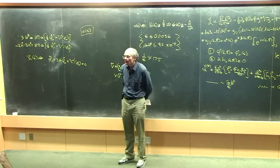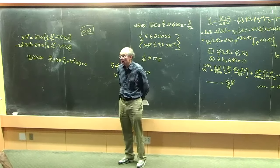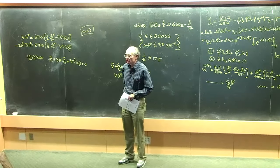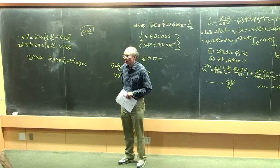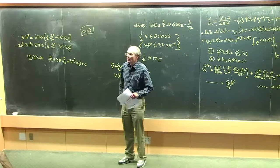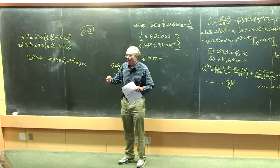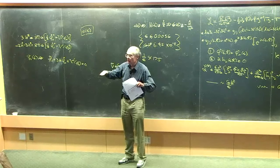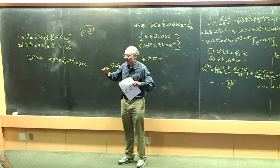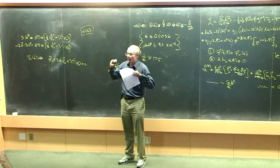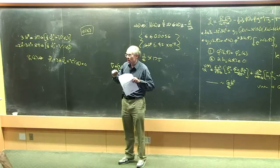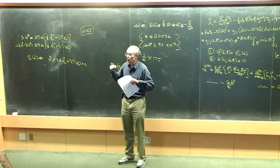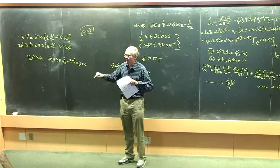The vacuum used is the FRW analog of the Bunch-Davies vacuum — the minimum energy state in the distant past. This is all free field theory, a harmonic oscillator mode by mode, but with a time-dependent mass and frequency. Other questions? So it's kind of embarrassing that we can't even do this at tree order, but the real problems I wanted to discuss are loop corrections.